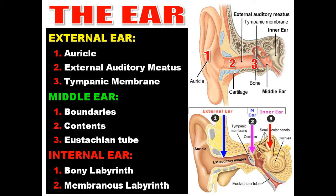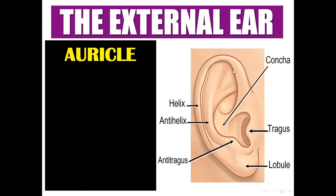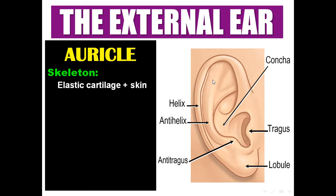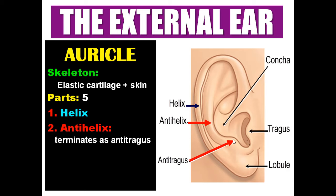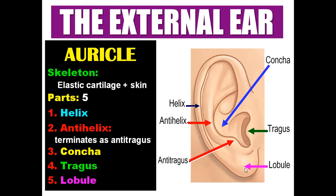Starting with the external ear: the external ear is formed of the auricle, external auditory meatus, and the tympanic membrane. The skeleton of the auricle is formed of elastic cartilage covered by skin. The auricle is formed of five parts: helix, anti-helix, and the anti-helix terminates by the anti-tragus. The depression leads to the external auditory meatus. This part is called the tragus, and this part is the lobule of the auricle.